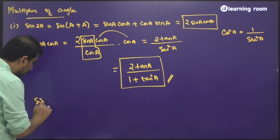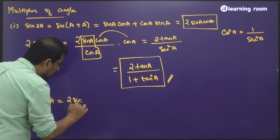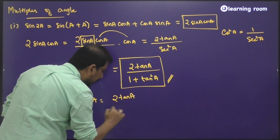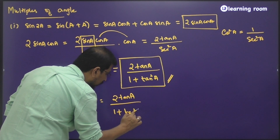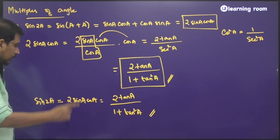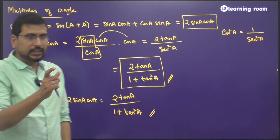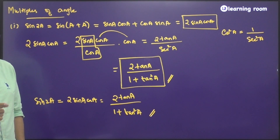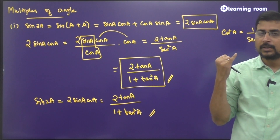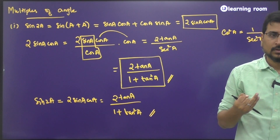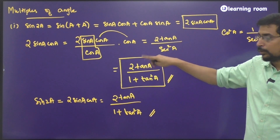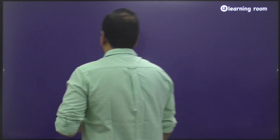So sine 2a is either 2 sine a into cos a, or it is also equal to 2 tan a divided by 1 plus tan square a. You are expected to remember both. 2 sine a cos a we will mostly use this year, while 2 tan a by 1 plus tan square a is used next year a lot — in your 12th grade, in chapters like inverse trigonometric functions and calculus. I've seen many students struggling with this. After I derive tan 2a, you will understand where the confusion starts.